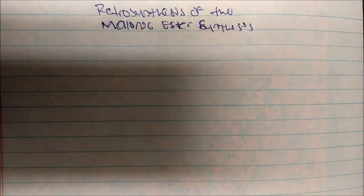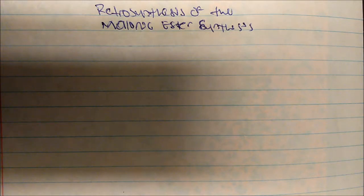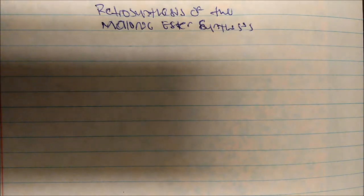In this video I'm going to talk about the retrosynthesis of the malonic ester synthesis. We're going to be given some products and we need to be able to make them. I'm also going to cover the acetone versus acetic acid synthon — diethylmalonate versus ethyl acetoacetate — and you need to know the structure of those two molecules. So what if we're given this molecule to make?